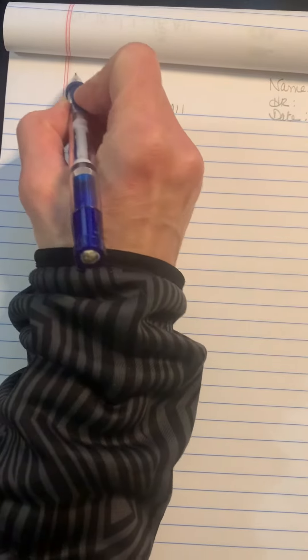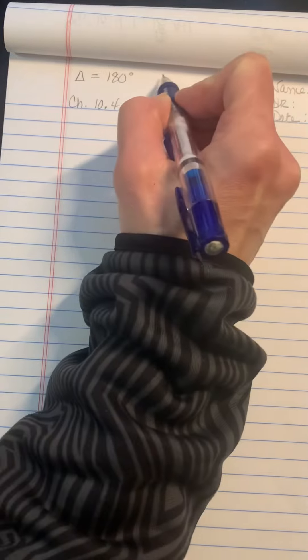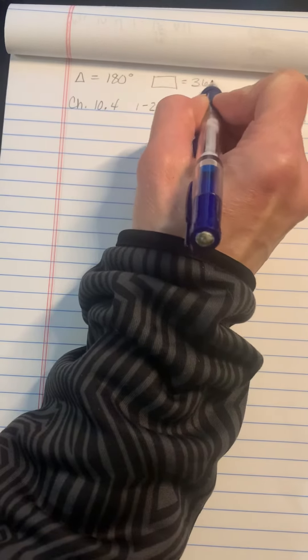All right, let's do 10.4, nice and easy, quadrilaterals. Remember, the sum of triangle angles equals 180 degrees, but when we get to a quadrilateral, the sum is 360 degrees.